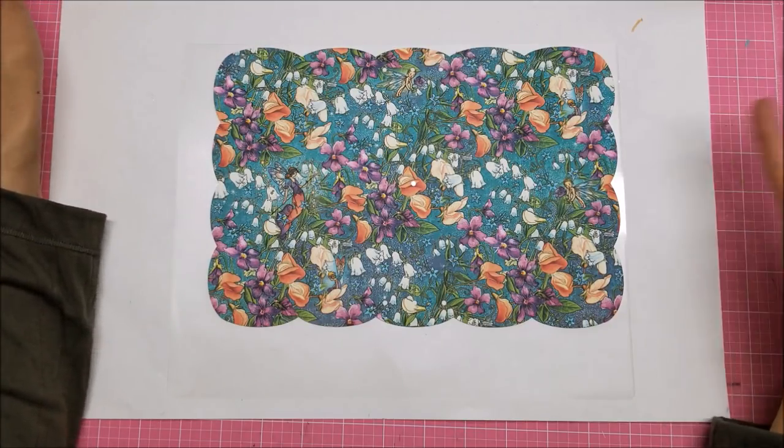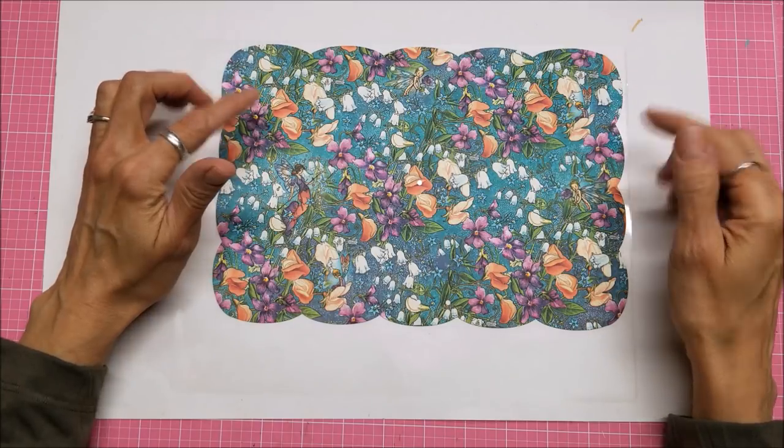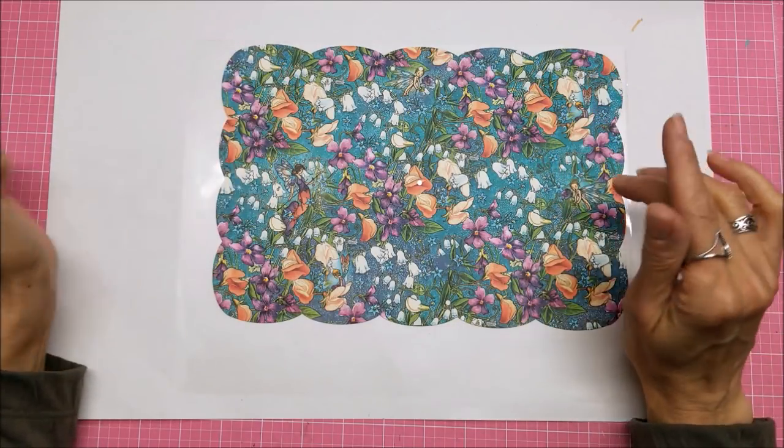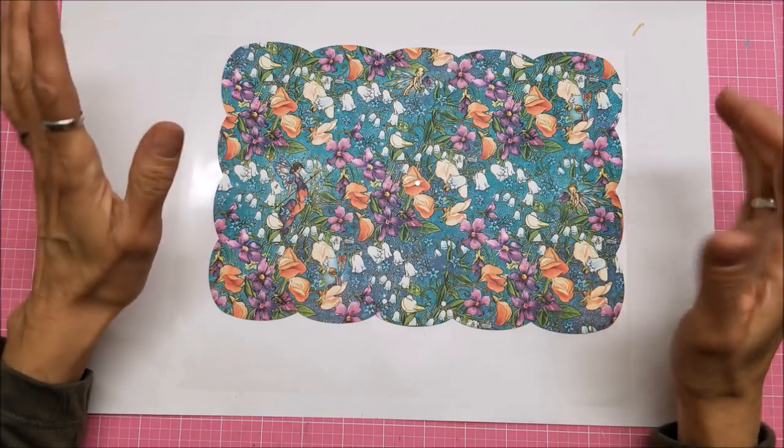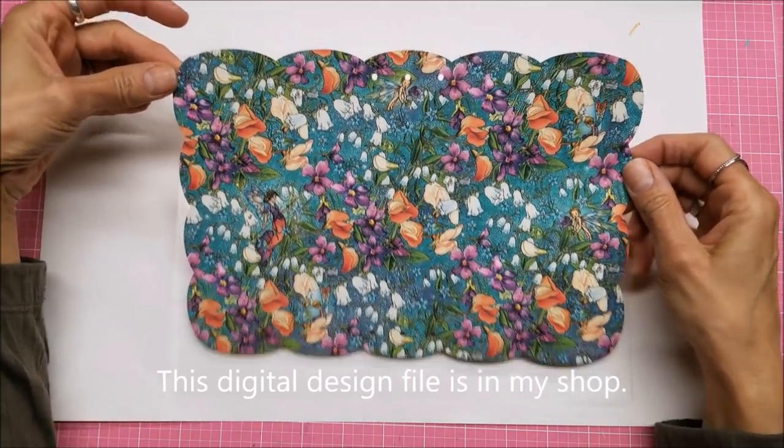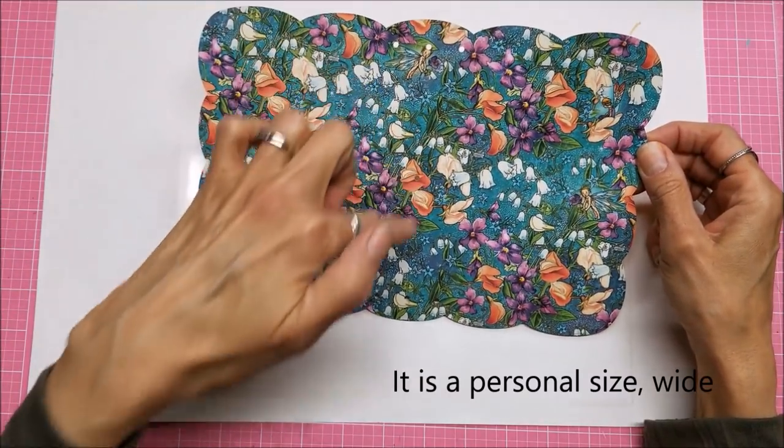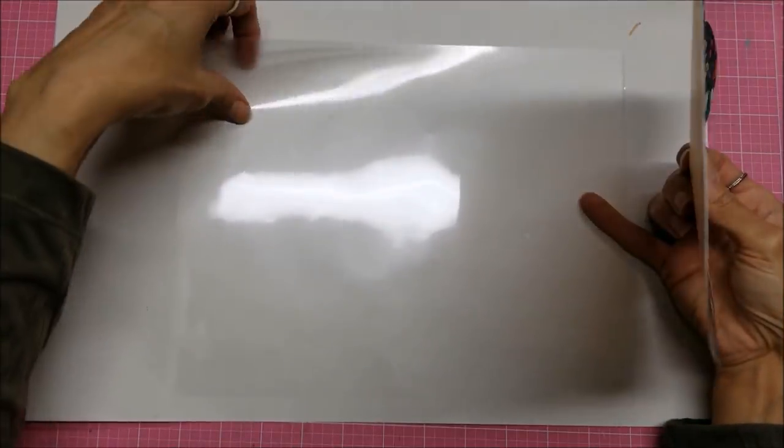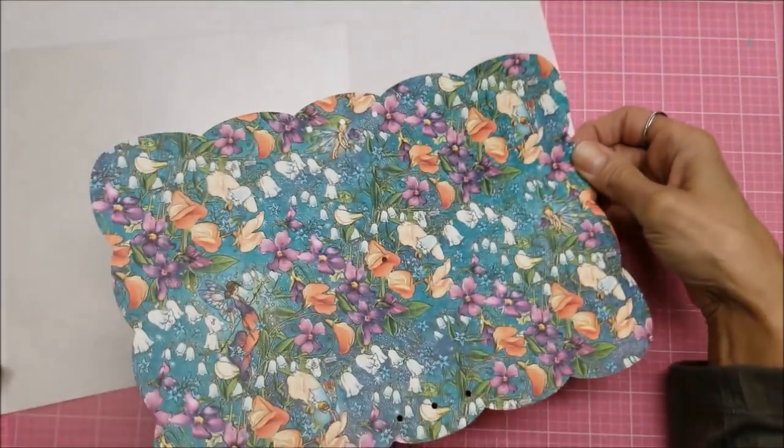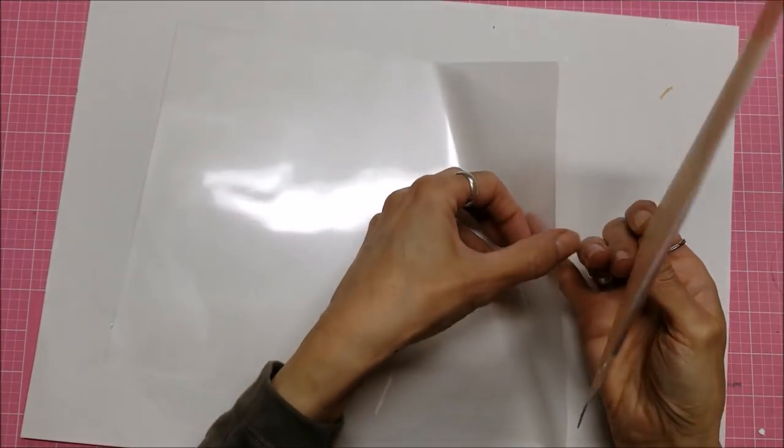I have one in the series about gluing cardstock onto foam and making a notebook cover out of that. So this one I have designed a scalloped notebook. You can probably see there's the three holes here, the one in the center, and the three holes here, and it's scalloped.